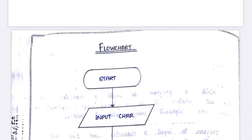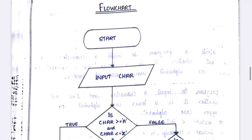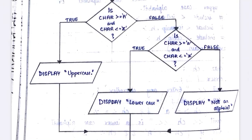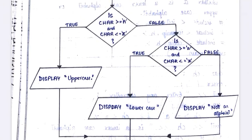Before that, if you have not subscribed my channel yet, please subscribe. Now for the flowchart: the first step is Start, then Input character, then the logic part comes. The first condition checks whether the character is greater than or equal to capital letter 'A' and less than or equal to capital letter 'Z' within single quotes.